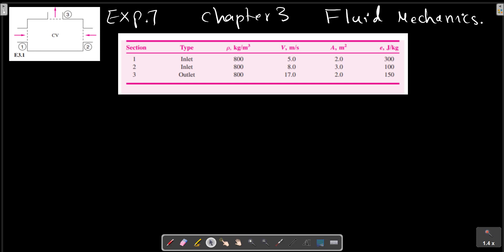This table provides information about the values at each section of inlet and outlet flows: the type, inlet or outlet, the density of each fluid in various cross-sections, the velocity and area, and the intensive properties of the flows, which is energy in this problem.